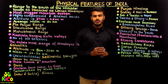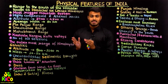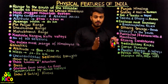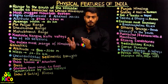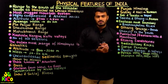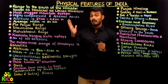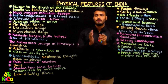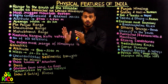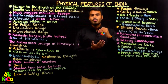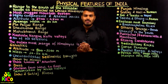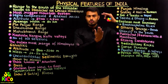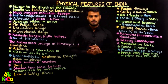Hello friends, welcome back. In the last lecture we discussed about the first part of Himalayan mountains — the Greater Himalayas. Now we will be discussing two more parts of Himalayan mountain ranges, as far as its descent from topmost level to bottommost level is concerned.